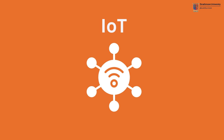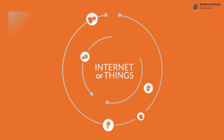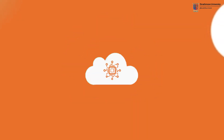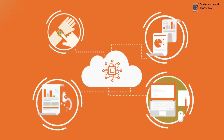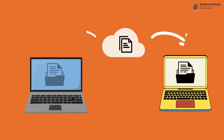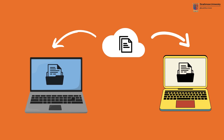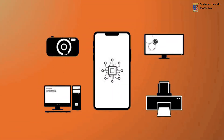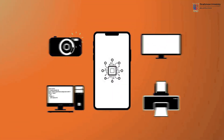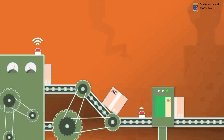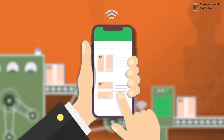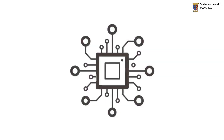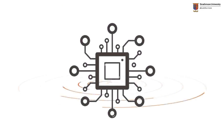IoT stands for the Internet of Things. It refers to a network of physical objects embedded with sensors, software, and other technologies that connect and exchange data with other devices and systems over the internet. These things can be anything from a simple home appliance to a sophisticated industrial machine.